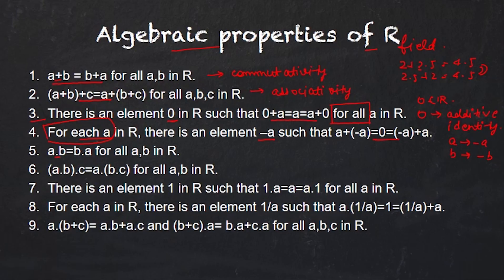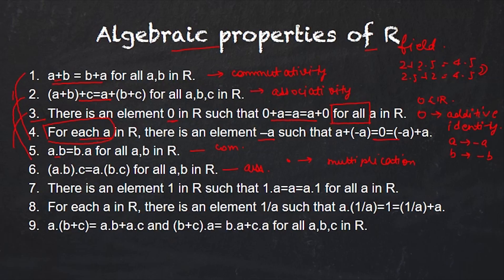The dot operation represents multiplication in R. Properties five through eight for multiplication are analogous to the first four for addition: commutativity (a·b = b·a), associativity, multiplicative identity (there exists 1 in R such that 1·a = a·1 = a for all a in R).